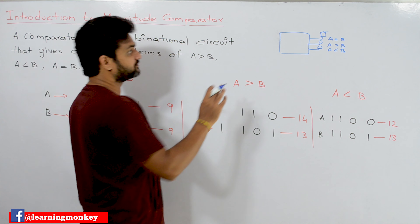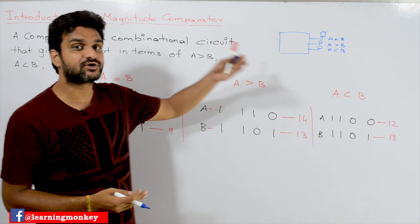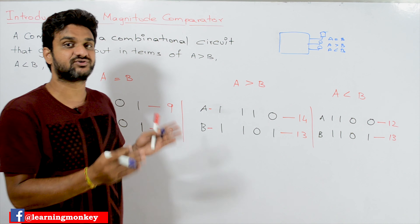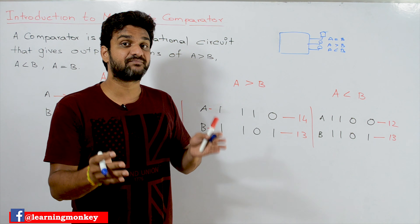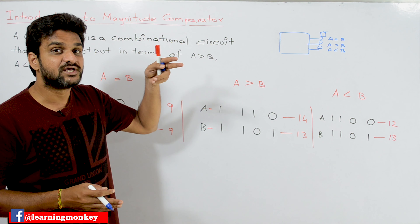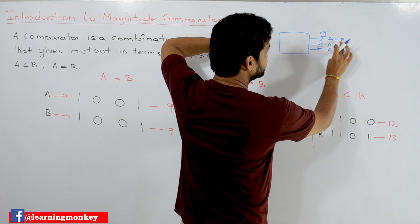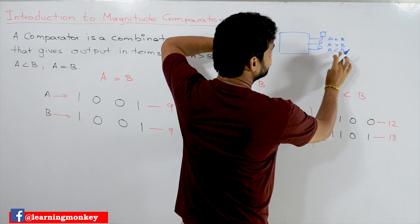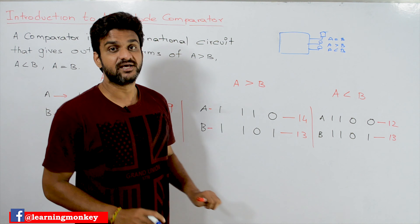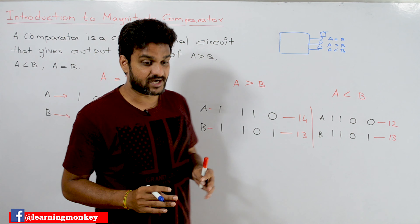The comparator is going to take two numbers — it may be a four-bit number, it may be a two-bit number, it may be a one-bit number. Whatever the number of bits in the number, it is going to take two numbers and give the output: whether A is equal to B, whether A is greater than B, or whether A is less than B. That decision can be made by this comparator.